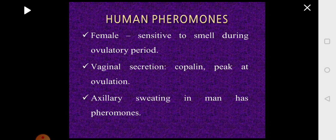Humans also produce pheromones, but this is seen mainly during the ovulatory period. In a normal 28-day menstrual cycle, ovulation occurs around the 14th day, and at that time the female produces a pheromone to attract the male. The vaginal secretion contains a chemical called copulin, which is secreted in large quantities at the time of ovulation so that if coitus happens then, fertilization will be successful. In males, pheromones are released from the axillary region — the armpits — which attract females.